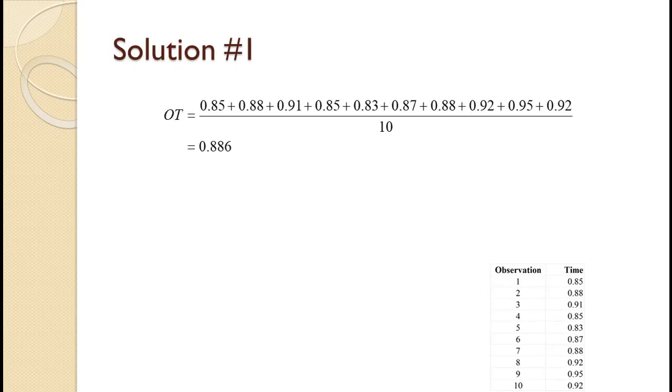To find the observed time we simply average the ten observations. They average to 0.886.